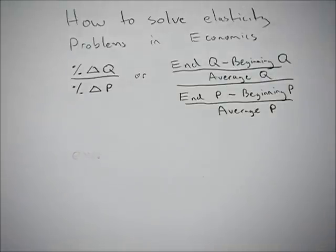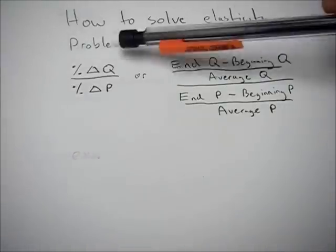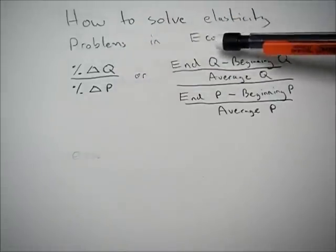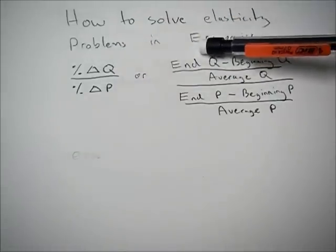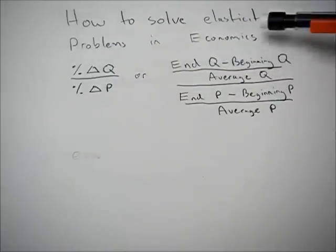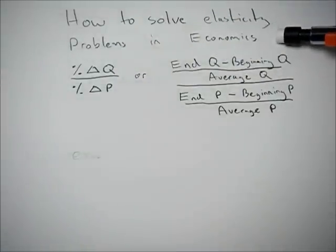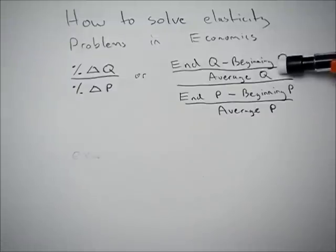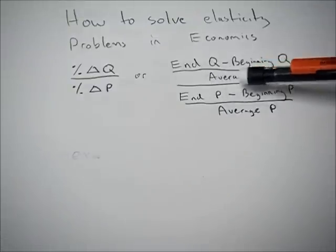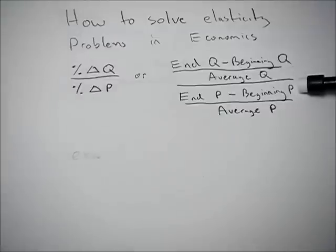This example looks at the price elasticity of demand. We have the percent change in Q, which is just our ending quantity minus our beginning quantity over average quantity. Then our end price minus our beginning price over average price.